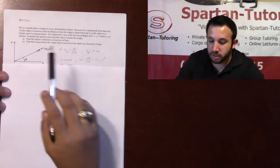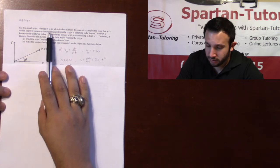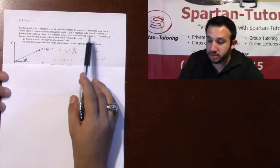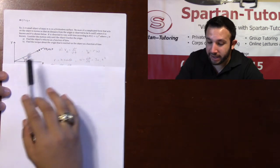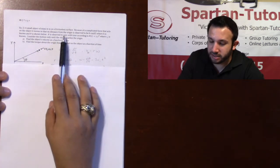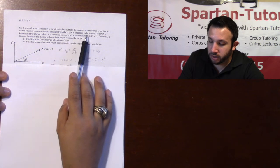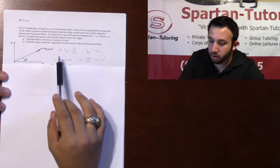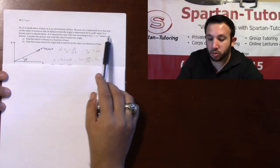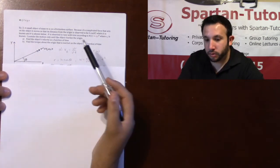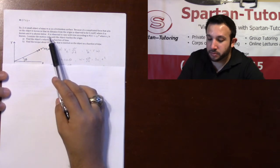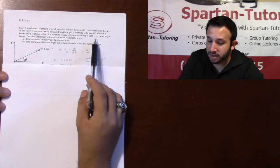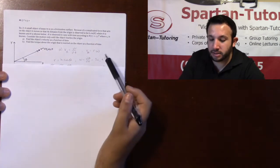Taking a look at this last one, it says that a small object of mass m is on a frictionless surface. Because of a complicated force that acts on the object, it moves so that its distance from the origin is observed to be h cosine theta. In this case, your r is going to be h cosine theta, where h is known and theta is shown below. Theta is observed to vary according to the following equation, so theta of t is c₁t³, where c₁ is known.